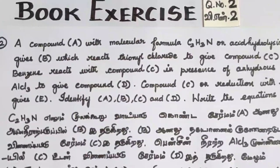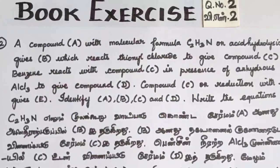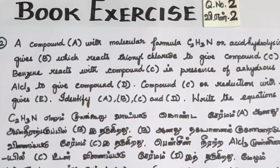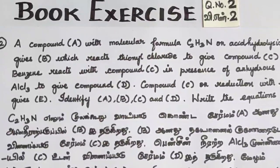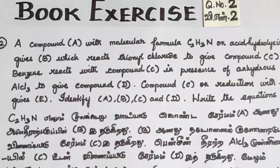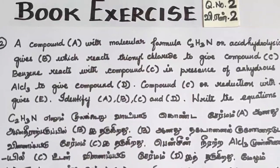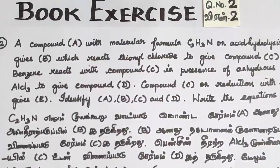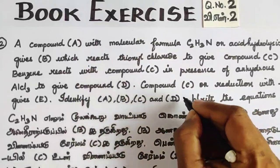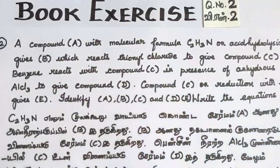A compound A with molecular formula C2H3N on acid hydrolysis gives B, which reacts with thionyl chloride to give compound C. Benzene reacts with compound C in the presence of anhydrous aluminium chloride to give compound D. Compound C on reduction with some reducing agent gives E. Identify A, B, C, D and E, and write the equations.